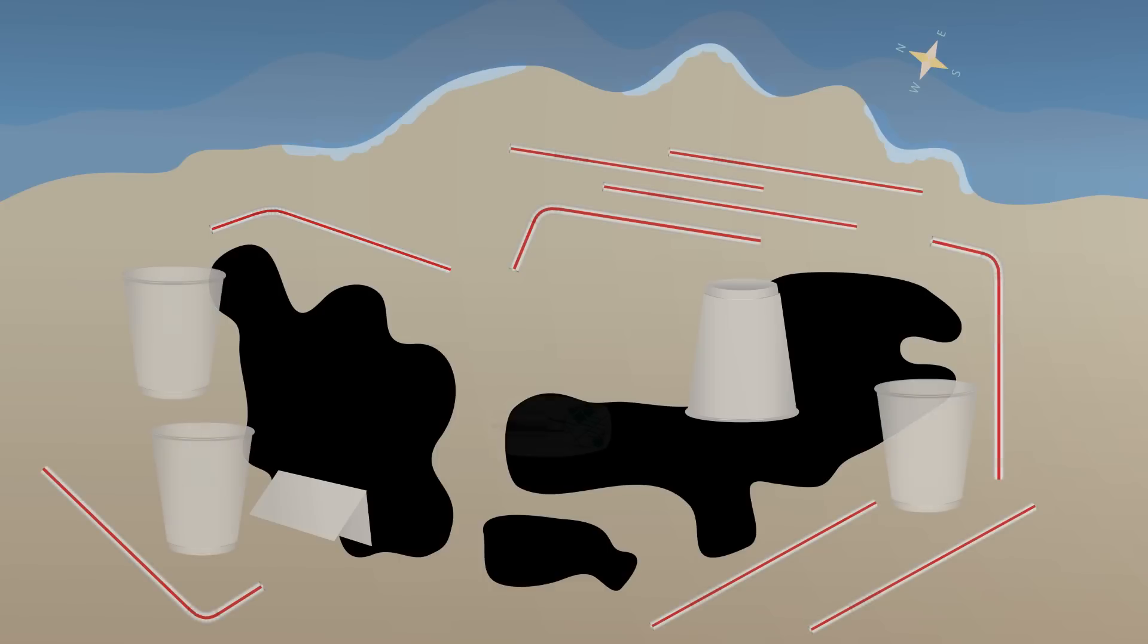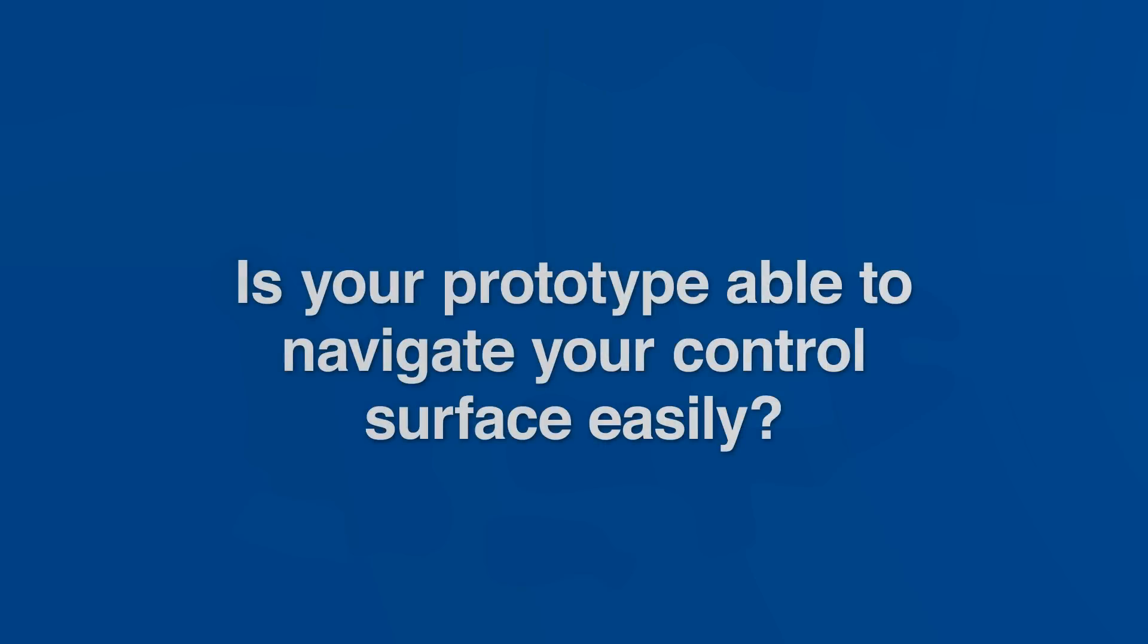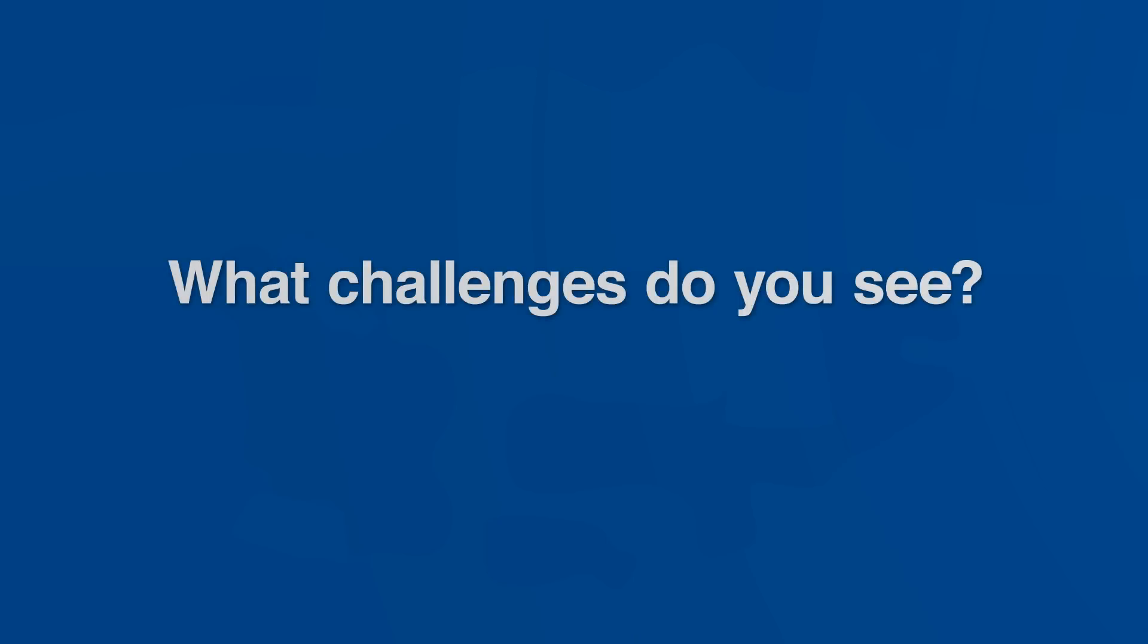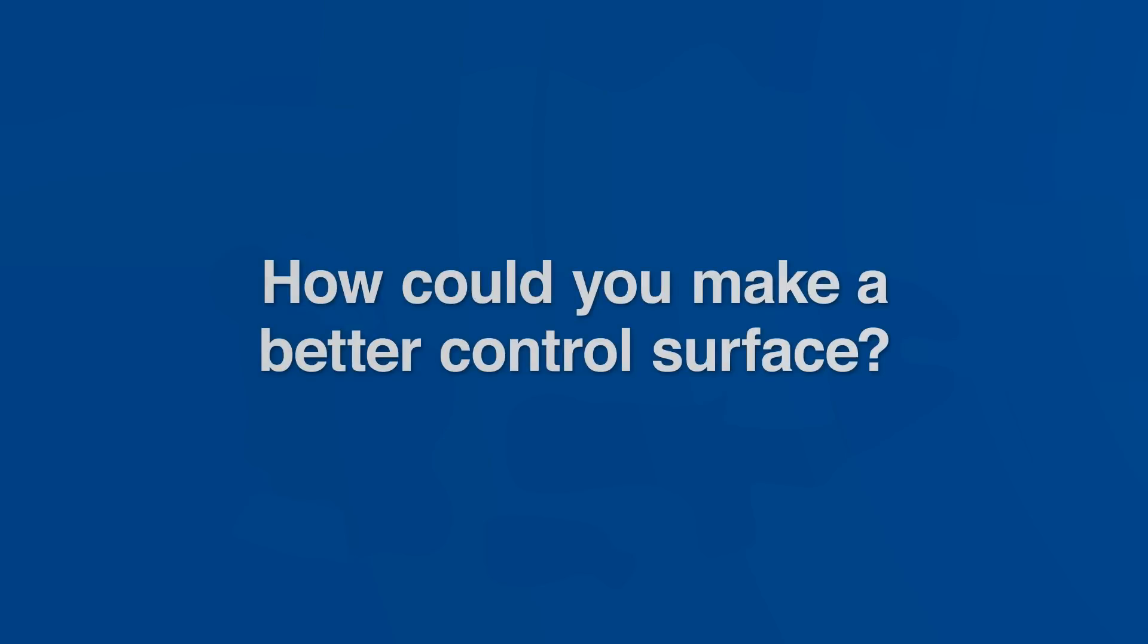Once your design is built, place your Ecobot in the containment area on the challenge mat and see what happens. Is your prototype able to navigate your control surface easily? What challenges do you see? How could you make a better control surface?